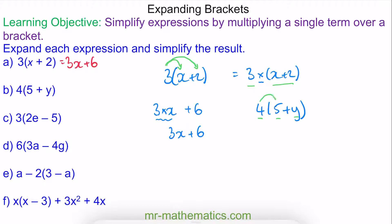So we have 4 times 5, which is 20. And then we have 4 times y, which is 4y. So this becomes 20 plus 4y.